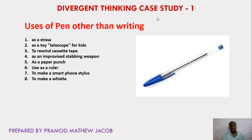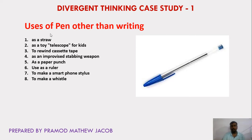Let's understand divergent thinking with a case study: find out the uses of a pen other than writing. The designer should think about what other uses a pen has besides writing. If we remove the cap and the two ends, we can use the pen as a straw. A pen can be used as a toy telescope for kids — in childhood, we all may look through the transparent body of a pen to see rainbow colors. It can be used for rewinding a cassette tape, as a stabbing weapon, or as a paper punch using the nib.